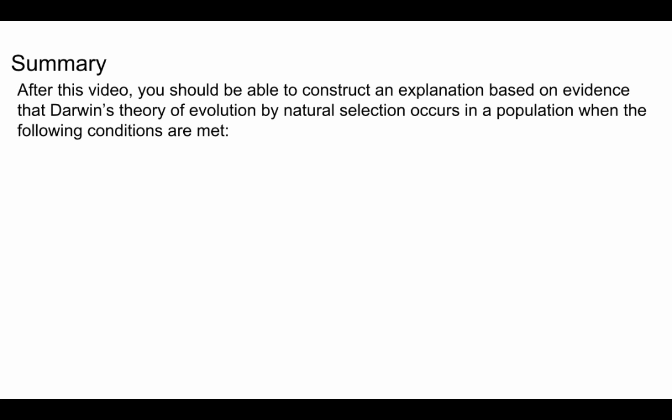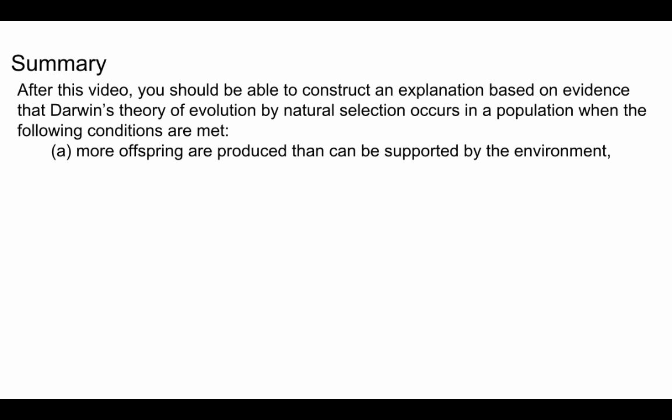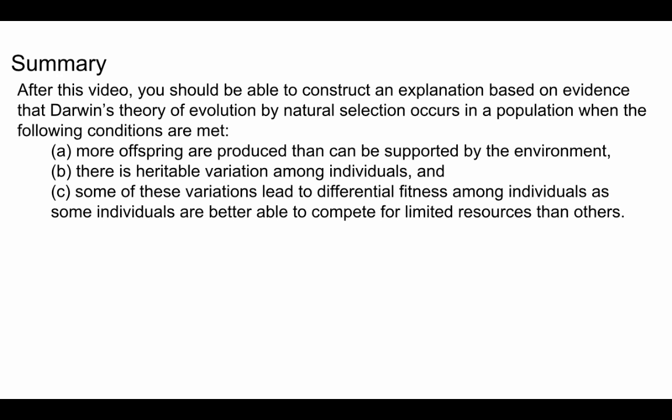In summary, the conditions necessary for natural selection to occur in populations are: first, more offspring are produced than can be supported by the environment — you need large numbers of offspring so that only some survive; second, there is heritable variation among individuals, meaning differences that are genetic and underlying; and third, some of these variations lead to differential fitness among individuals, as some individuals are better able to compete for limited resources than others. When we have those variations, certain variants are going to be better suited to that very competitive environment that is the wild.